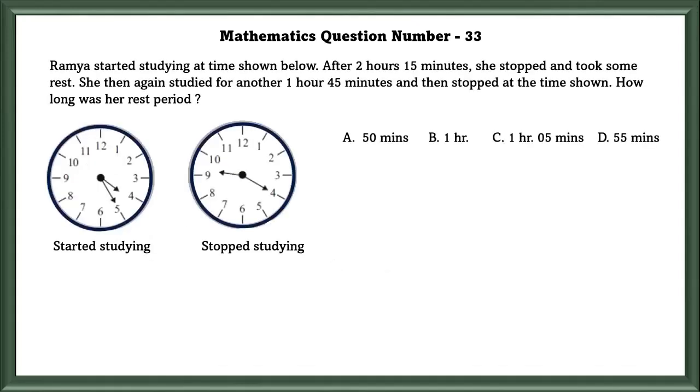Mathematics question number 33. Ramya started studying at the time shown below. After 2 hours 15 minutes, she stopped and took some rest. She then studied for another 1 hour 45 minutes and then stopped at the time shown. How long was her rest period? Total time she studied equals 2 hours 15 minutes plus 1 hour 45 minutes, which equals 4 hours.